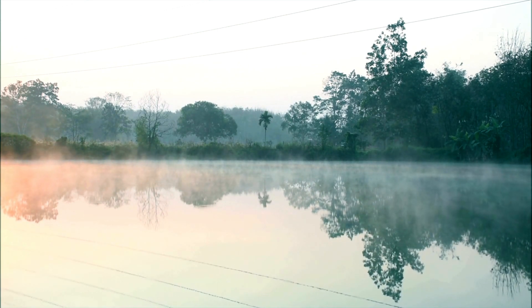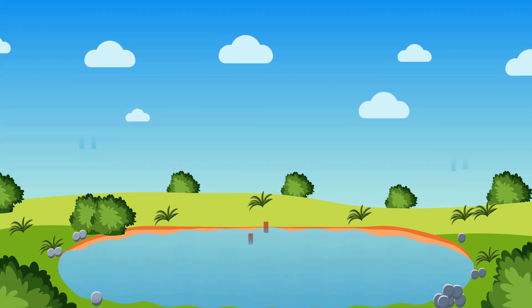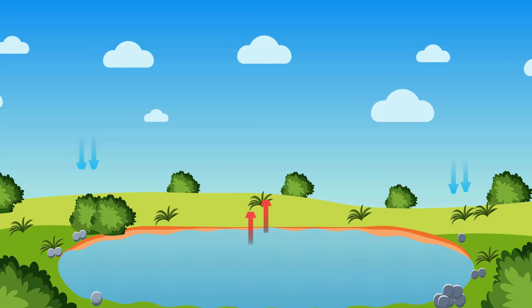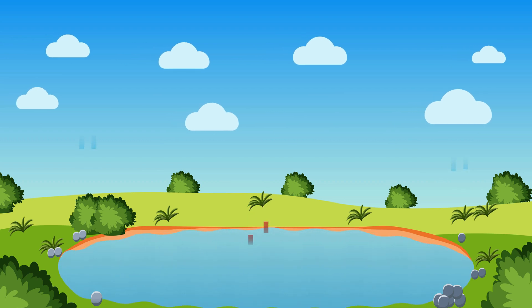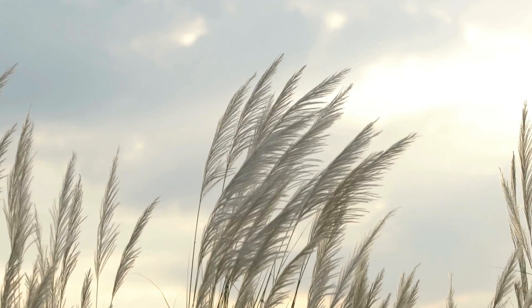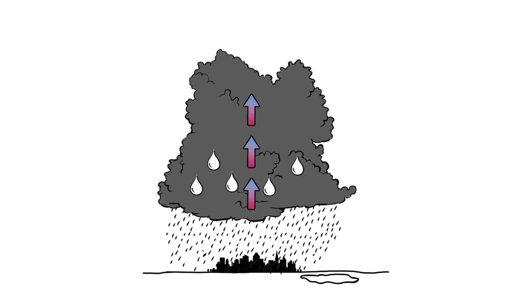Low tide is the period when the water level drops from high to low. The beach gradually widens. At high tide, the water returns and the water level rises. The difference in water height between high tide and low tide is known as the tide range. This depends on the size of the sea and the shape of the coast.